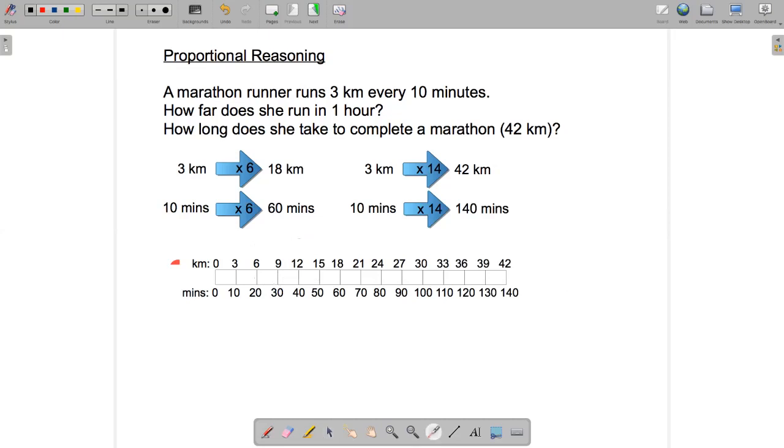So the answer to one of the questions, how far does she run in an hour, is going to be here, because one hour is 60 minutes, so 18 kilometers. And the other question was, how long does it take to complete the marathon, which is 42 kilometers, so 140 minutes.